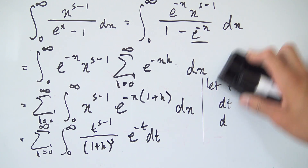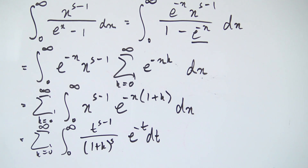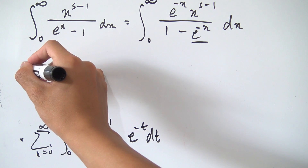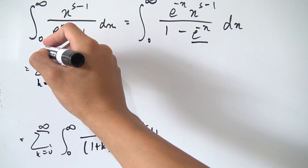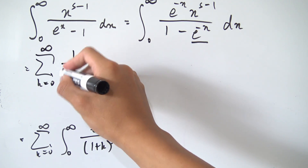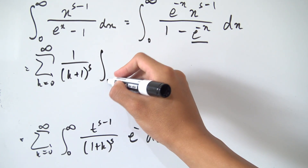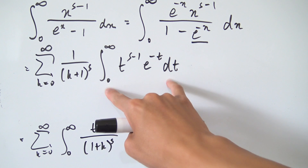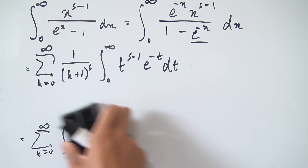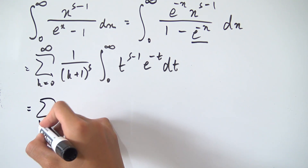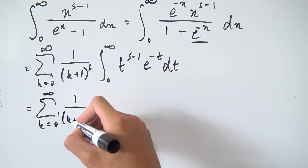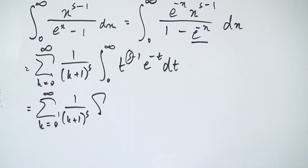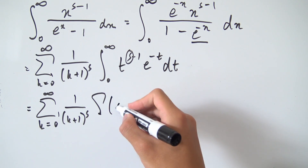We're very close now — this looks much more like a gamma function. Since 1 plus k to the s is a constant in terms of t, we pull it out front. We now have the sum from k equals 0 to infinity of 1 over k plus 1 to the s, times the integral from 0 to infinity of t to the s minus 1 e to the minus t dt. That integral is exactly the gamma function, giving us gamma of s.